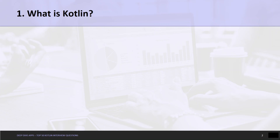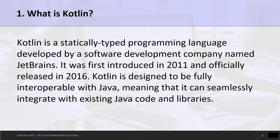Question 1: What is Kotlin? Kotlin is a statically typed programming language developed by a software development company named JetBrains. It was first introduced in 2011 and officially released in 2016. Kotlin is designed to be fully interoperable with Java, meaning that it can seamlessly integrate with existing Java code and libraries.